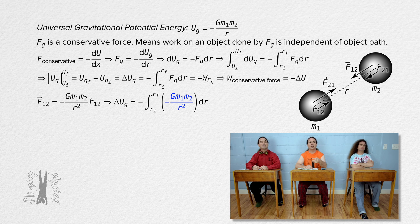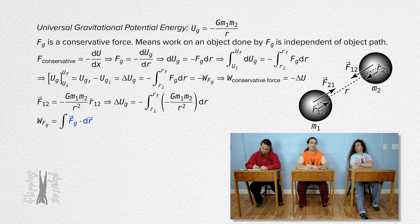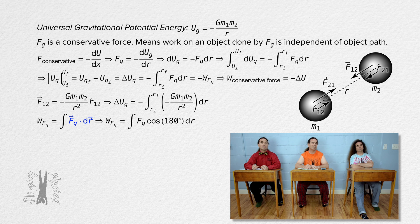We could understand that the negative needs to be in front of the force of gravity in the integral using the work as the integral of the dot product of force with respect to position. Those two vectors — force of gravity and dr — are opposite in direction, and that gives an angle of 180 degrees, and the cosine of 180 degrees is negative 1. That means the work done by the force of gravity equals the integral of the negative of force of gravity with respect to position. That's why the negative is there inside the integral.